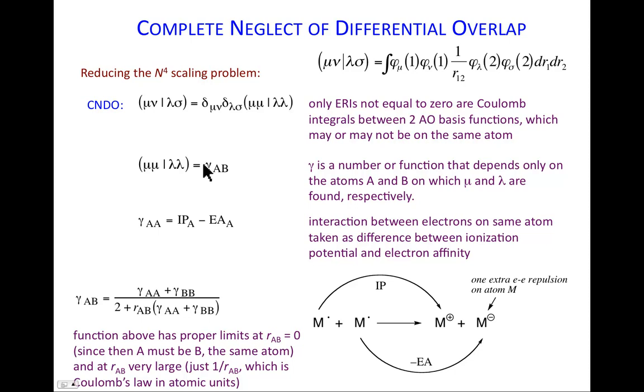For these surviving integrals, to decide how will I compute a mu-mu lambda-lambda interaction, you will just go to a table and look up a certain value gamma, and gamma will depend on the nuclei A and B on which mu and lambda reside. In the case where A is equal to B—that is, these two functions are on the same nucleus—the value that's recorded in the table is going to be the ionization potential of the atom minus the electron affinity of the atom.